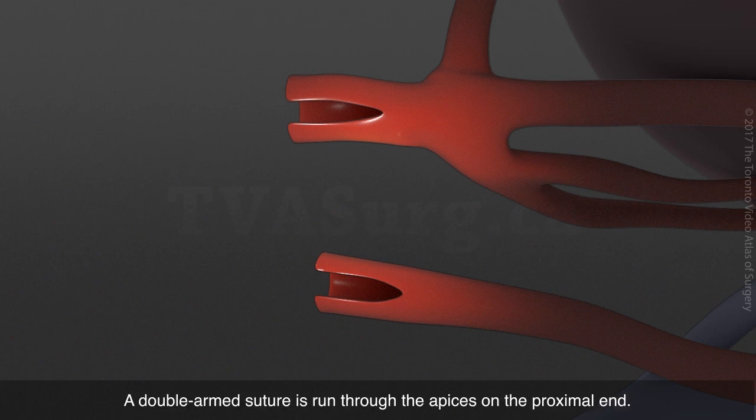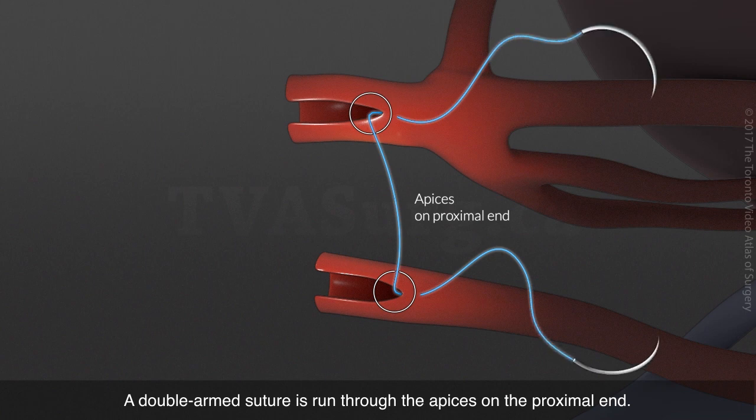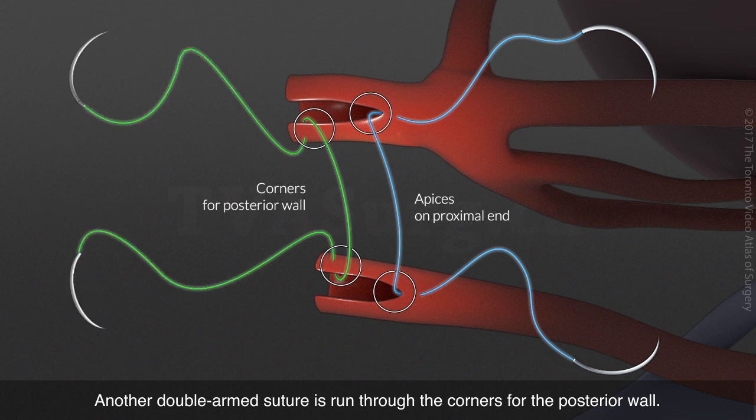A double-armed suture is run through the apices on the proximal end. Another double-armed suture is run through the corners for the posterior wall. These form the stay sutures.